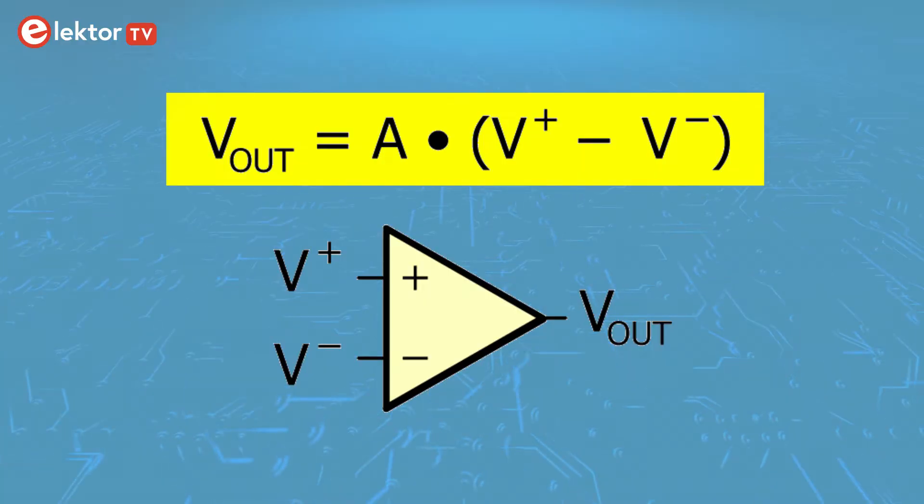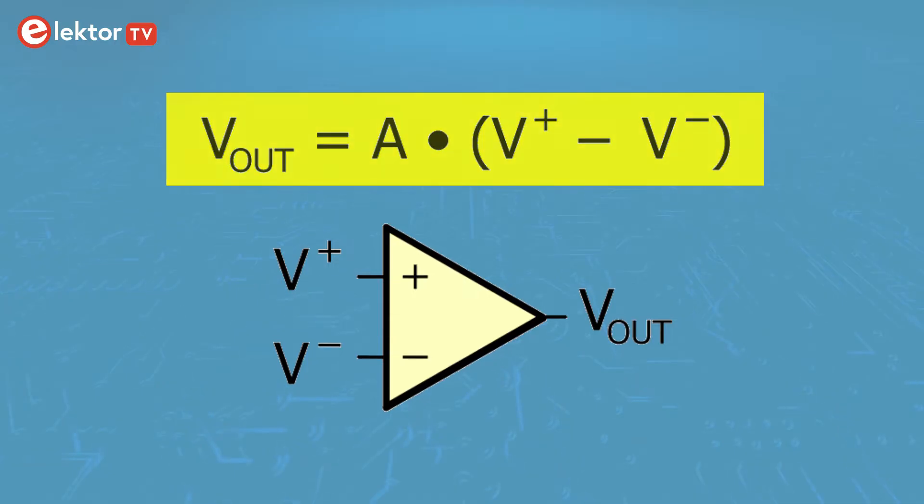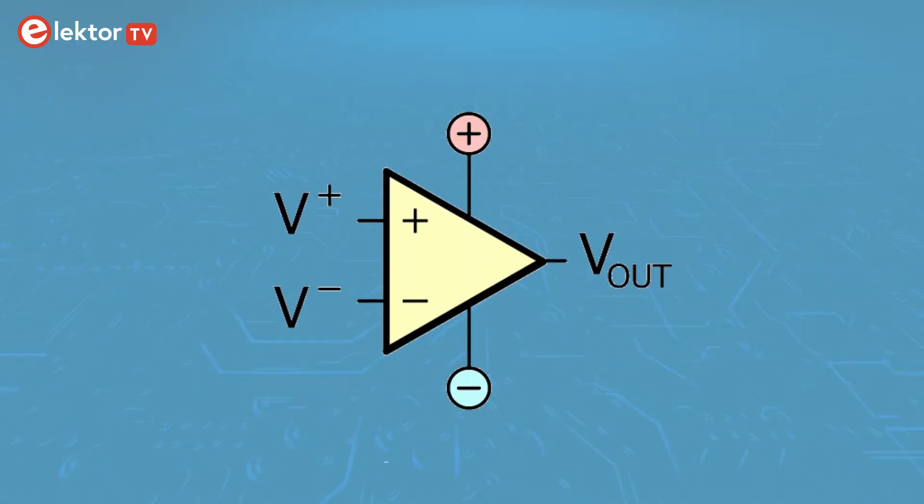For now, let's go back to our first equation. If A is so big, then you might wonder how an Op-Amp can be useful, as its output will be either plus or minus infinity, depending on if V minus is lower or higher than V plus. The output can't be infinity, of course. Infinity is limited by the power supply. So plus infinity is the positive supply voltage, and minus infinity is the negative supply voltage. We will assume a symmetric supply of, say, plus and minus 12 volts.